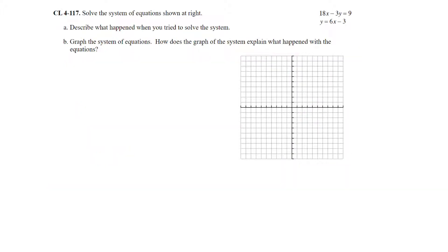On question 117, solve the system of equations shown at the right and describe what happened when you tried to solve the system. This one is again set up for substitution. We're going to take 6x minus 3 and substitute it in for y. That gives 18x minus 3 times 6x minus 3, which simplifies to 18x plus 9. The variable terms cancel out again, but this time we are left with a true statement. So now we know not only are there solutions, but there are infinitely many solutions.